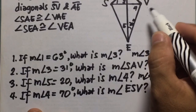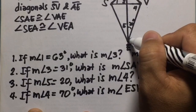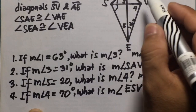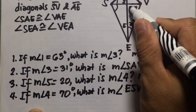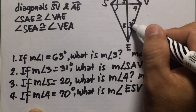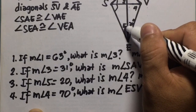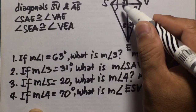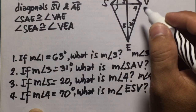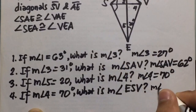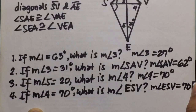Number four: if the measure of angle 4 is 70 degrees, what is the measure of angle ESV? If this is 70 and the right angle is 90, then the remaining angle is 20 — the same result as number three. So this is 20 and this is also 20, meaning the measure of angle ESV is equal to 70 degrees.